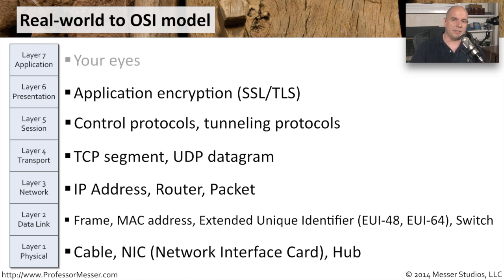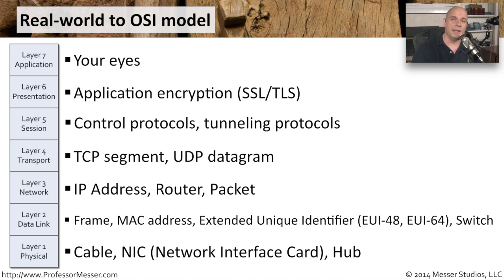Finally, at layer 7 is where we see the email, the decrypted information, the decrypted web page that we were asking for. So every time we send information, it starts at layer 7, works its way down to layer 1, goes across the network, and at the other end, it performs exactly the same thing all the way back up to layer 7 again.